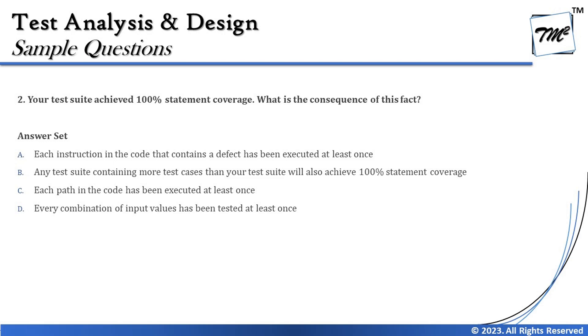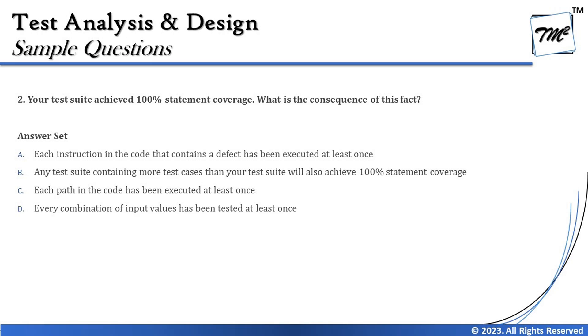Option C says: 'Each path in the code has been executed at least once.' If there is a loop in the code, there may be an infinite number of possible paths, and it is certainly not possible to execute all of them. For example, if there is a do-while or a for-loop of 100 iterations, you don't write 100 test cases. Option C is about path testing, not statement coverage, so it does not meet the expectations.